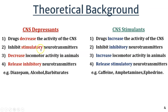CNS depressants inhibit the stimulatory neurotransmitters — specifically the catecholamine neurotransmitters. They stop the release of stimulatory neurotransmitters like dopamine and norepinephrine. This decreases the locomotor activity in CNS depressants, whereas CNS stimulant drugs increase the locomotor activity. This is the basic theory behind today's experiment.